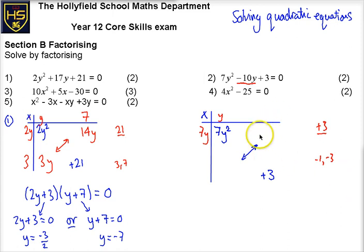I've got to choose the correct way round. If I put the minus 3 with the 7y, it's going to give me minus 21y here, which is too large in terms of its size. So let's pair the 3 up with here, and then let's put the minus 1 up here. So we get minus 7y and then plus 3y, which indeed does give us our minus 10y. So we can factorise it.